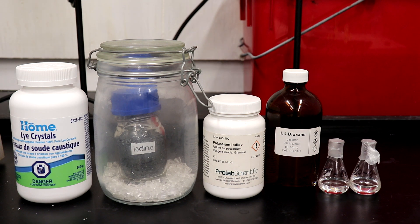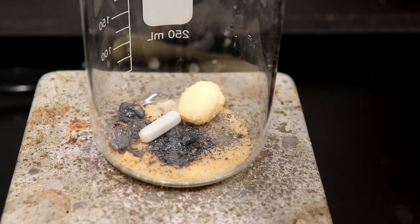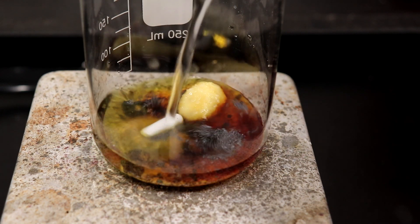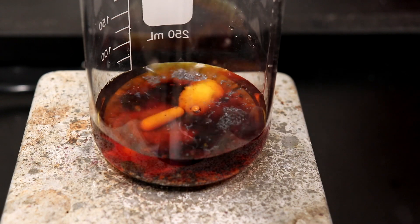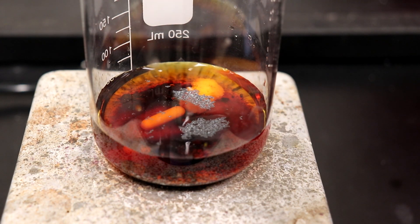In search of some more conclusive results, I decided to run the iodoform test for methyl ketones on both of the samples. I first had to prepare the testing reagent by dissolving 5 grams of iodine and 10 grams of potassium iodide in 50 ml of water.